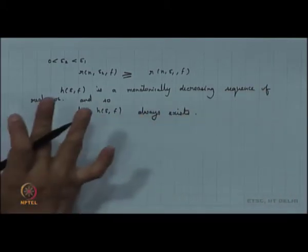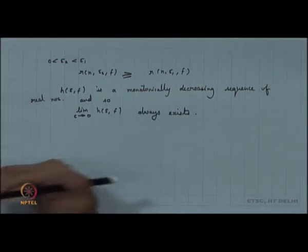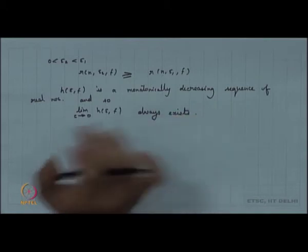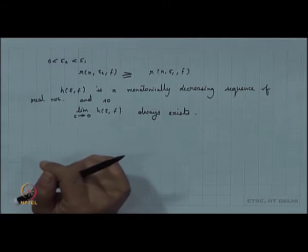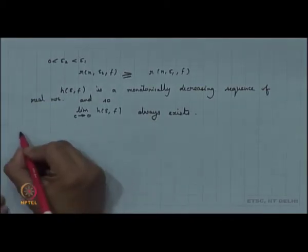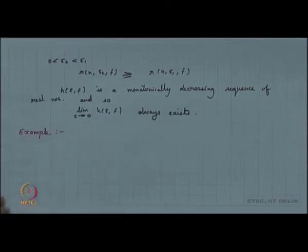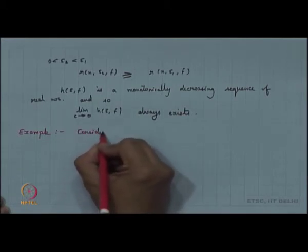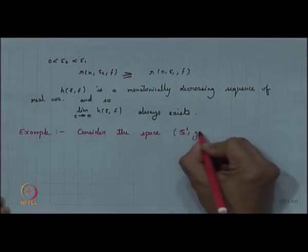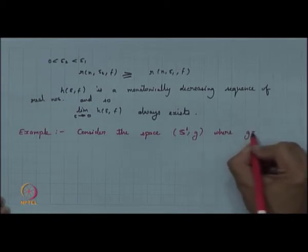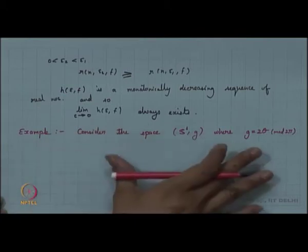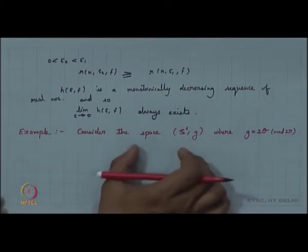From this definition we can see that the entropy for the shift space that we had computed in earlier lectures was basically just Bowen's definition of entropy. Now let us consider some examples. The first example: consider the circle S^1 and the angle doubling map G where G(theta) = 2*theta mod 2*pi. We have already studied this system earlier. Let us compute the topological entropy for this system.